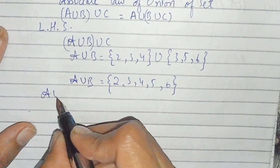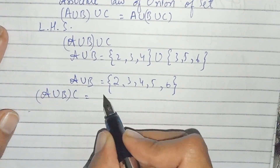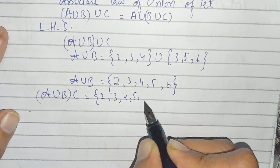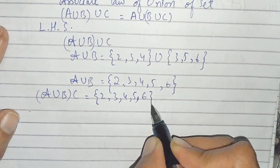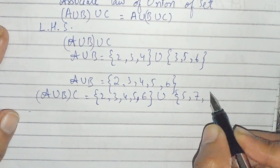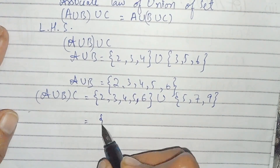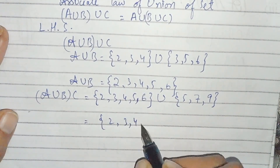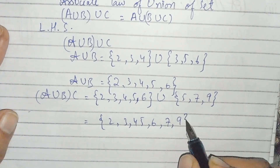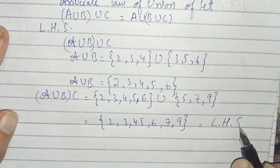Now we take the union of (A union B) with C. A union B is {2, 3, 4, 5, 6} and C is {5, 7, 9}. By taking their union we get {2, 3, 4, 5, 6, 7, 9}. This is equal to the left hand side.